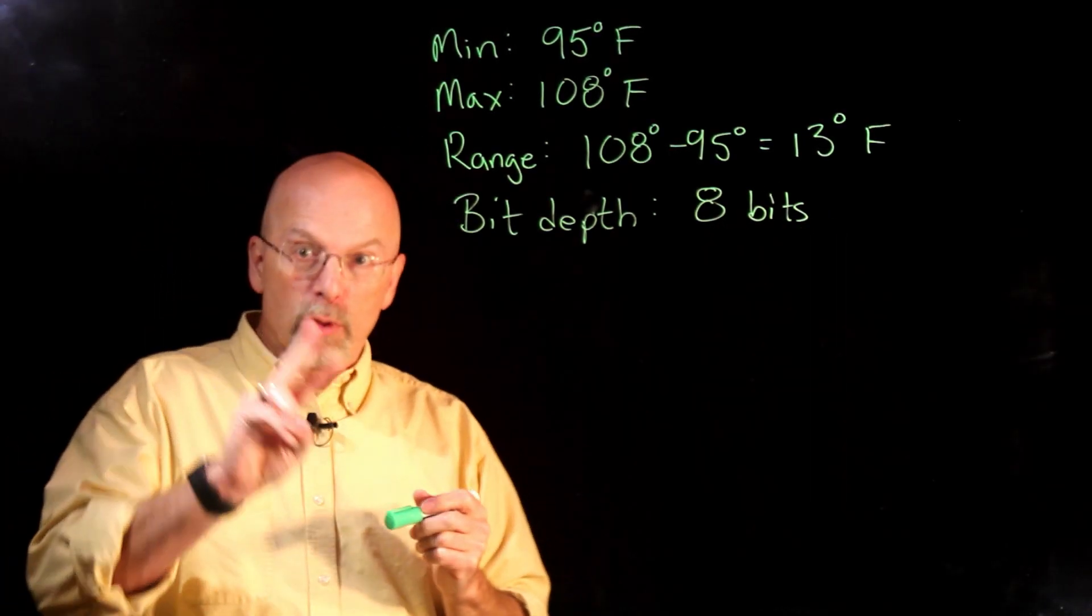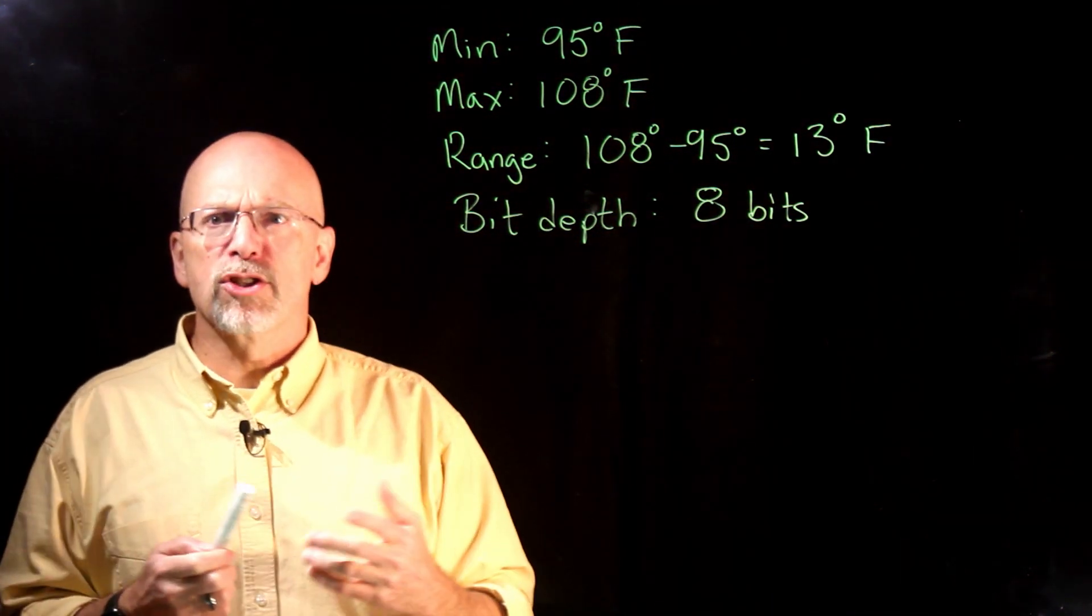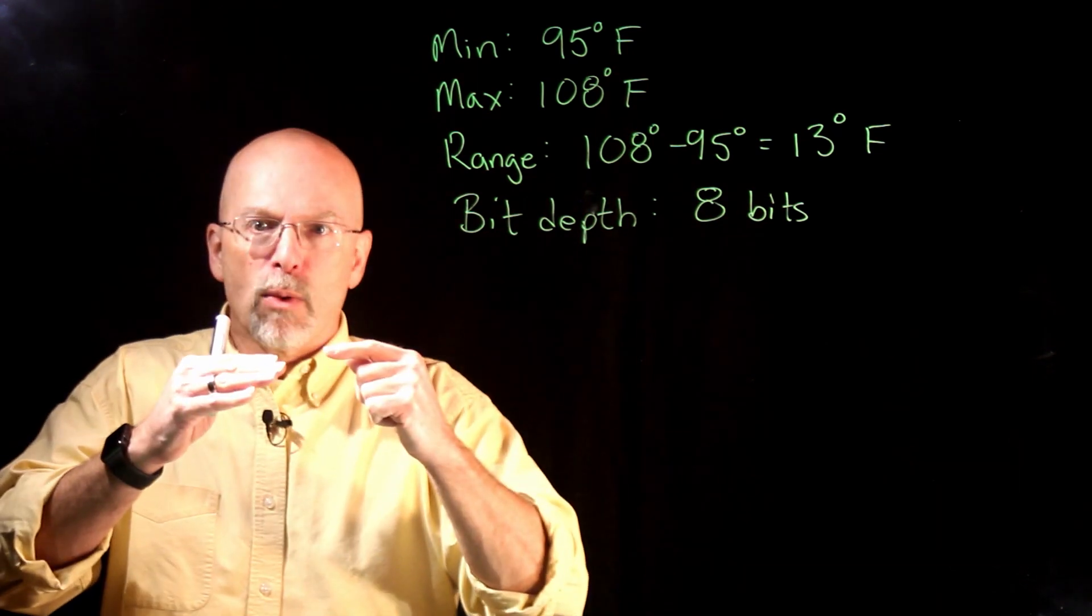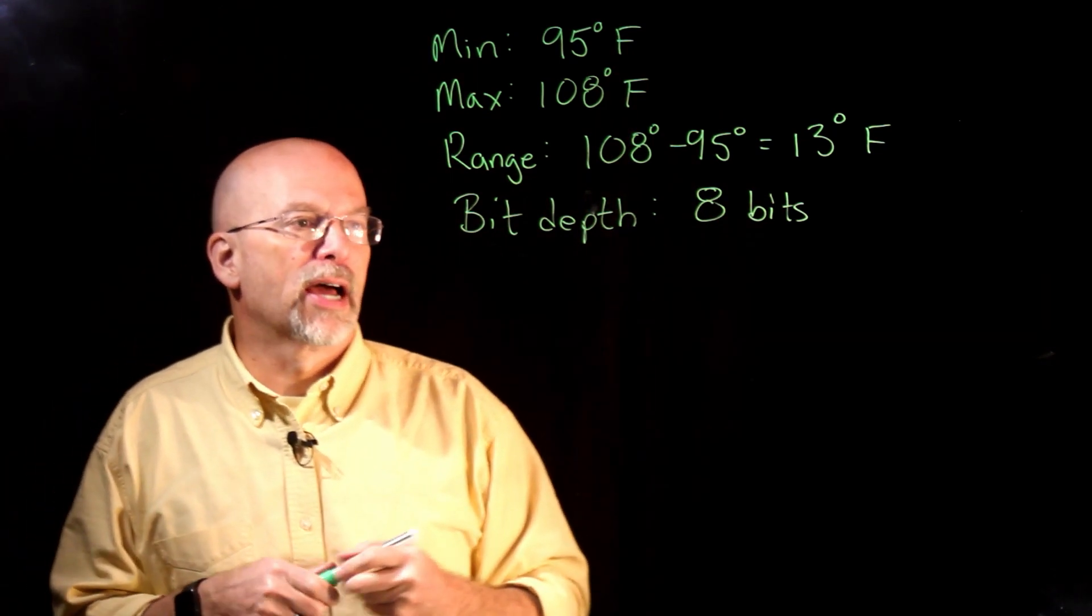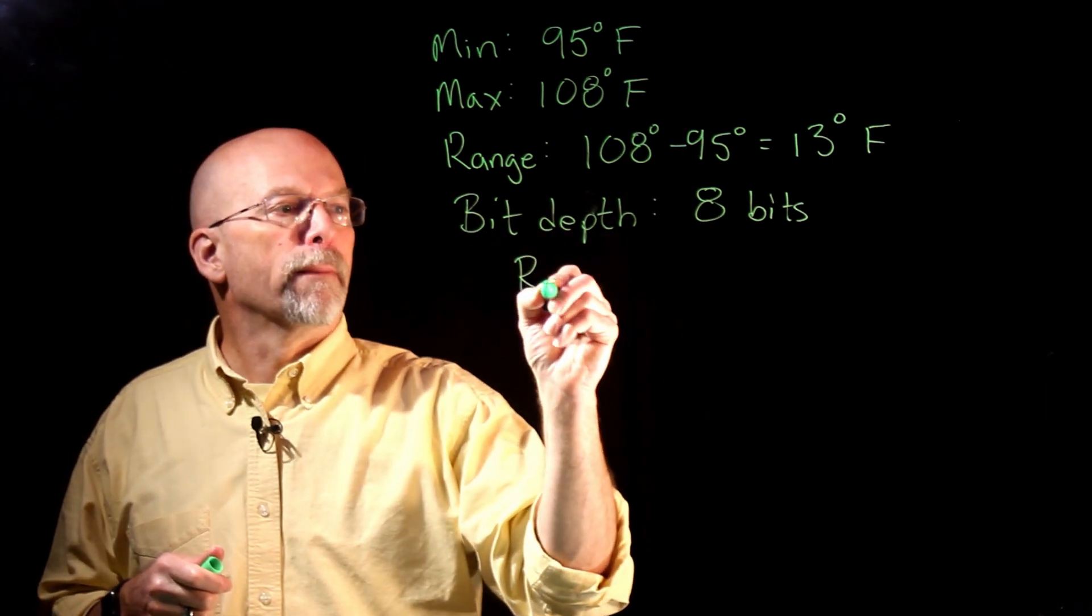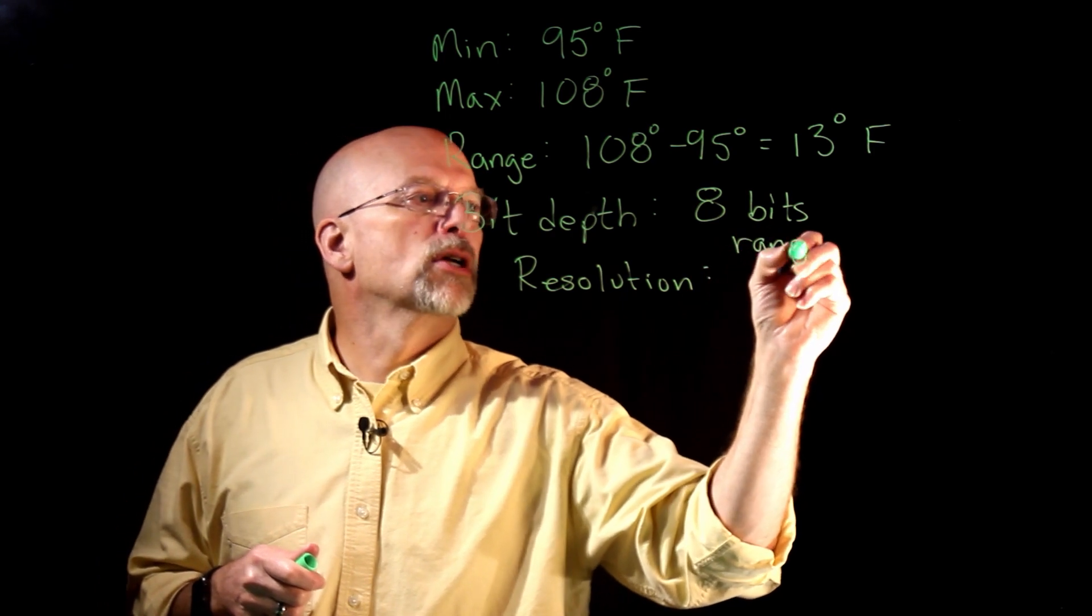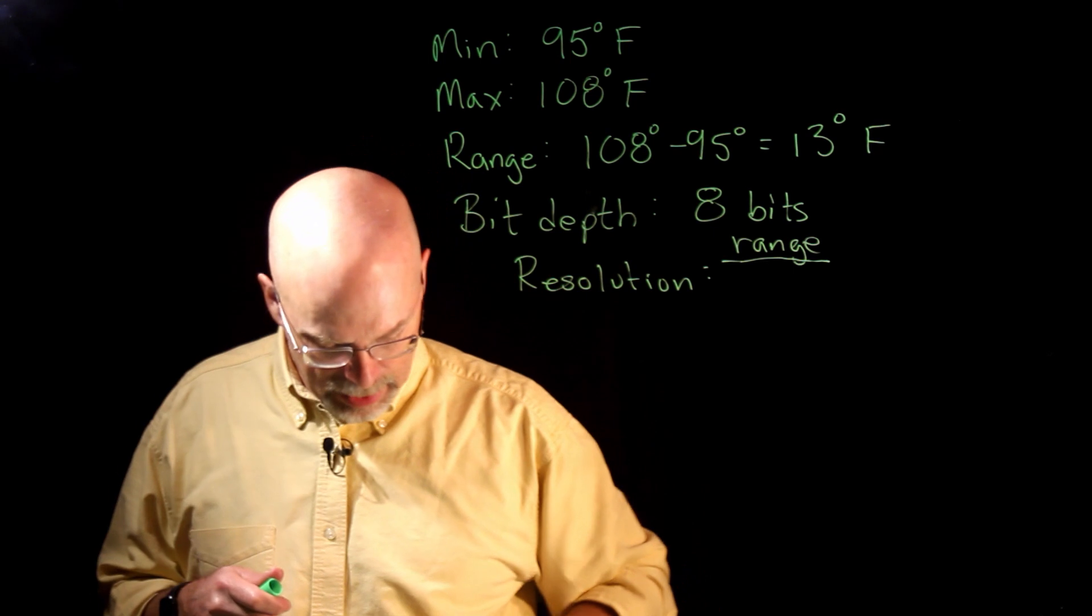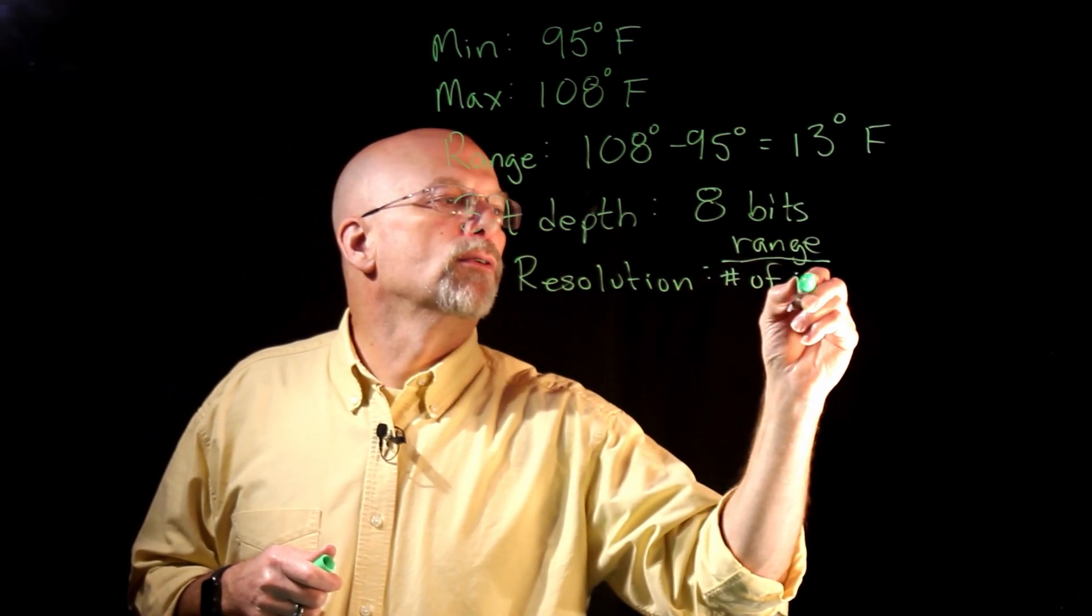There are two things that I'd like to get from this. The first thing I'd like to get is, what is the resolution? How much, every time we count up by one, how much does that translate in degrees Fahrenheit? So the resolution is equal to the range divided by the number of intervals.